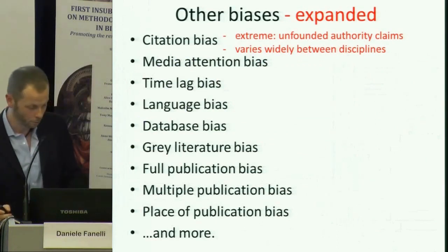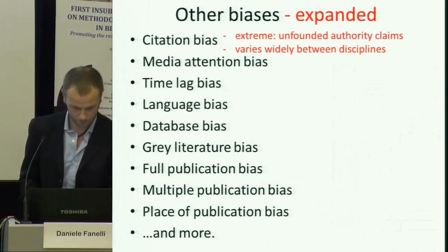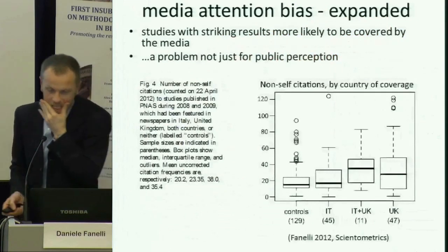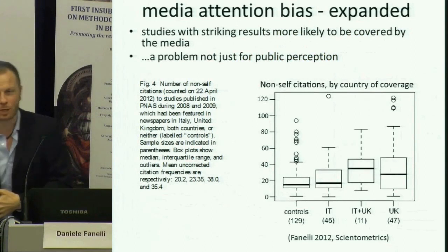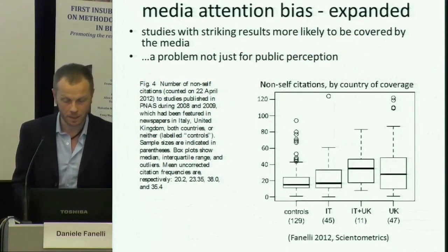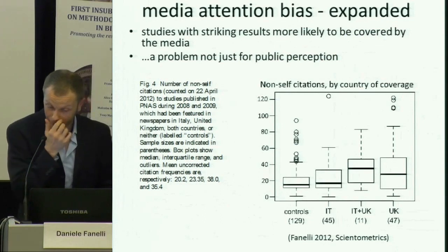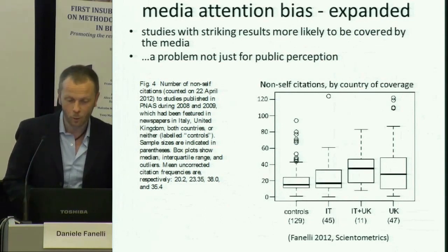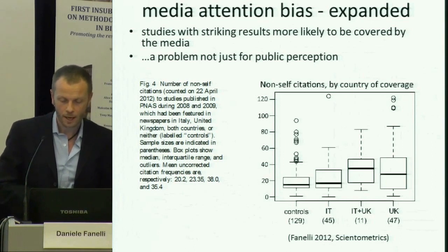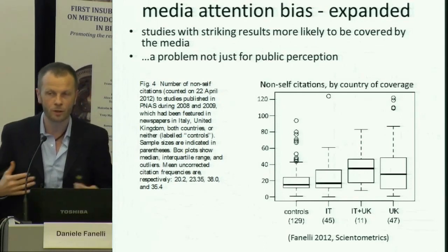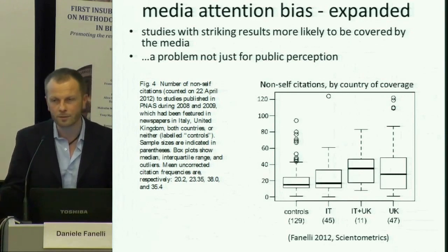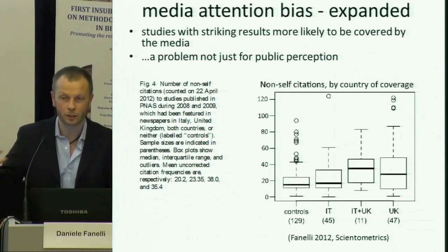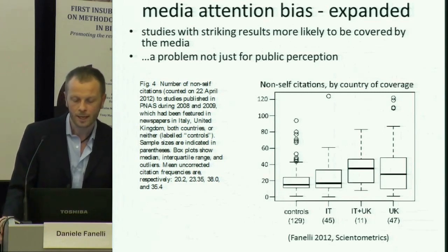This is the addendum we will put to the citation bias example. Media attention bias: the problem is that stronger, more striking results are more likely to be covered by the media. What I don't like about the way the systematic review discusses this form of bias is that they basically focus on public perception — that this will distort practitioners' or patients' likelihood to believe certain treatments. But this is quite not the whole case.